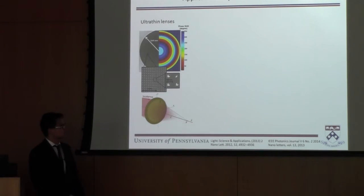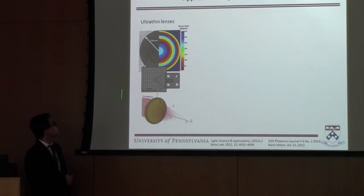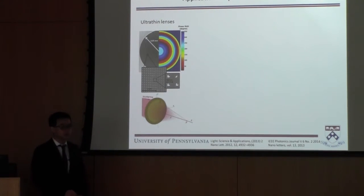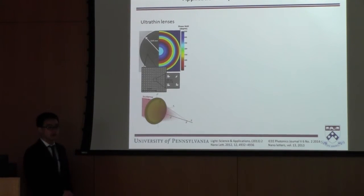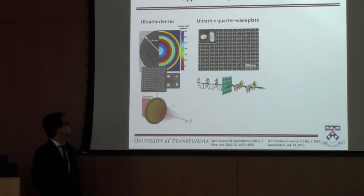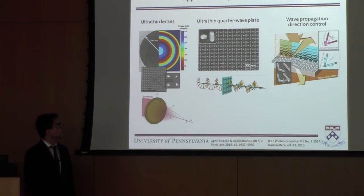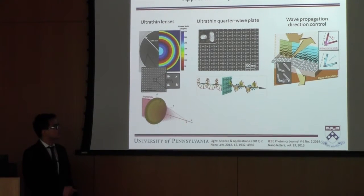Besides biosensor applications, plasmonic structures have many other applications. Here are ultra-thin lenses that can be made based on very small plasmonic structures. By arranging these plasmonic structures circularly, they have the amazing ability to interact with light so the light becomes focused after passing through the metasurface. Here is an ultra-thin quarter-wave plate that can change circularly polarized light into linear polarization or vice versa. And here is an example of bending light from an interface — the interface can be designed to bend incident light into any direction after passing through it.